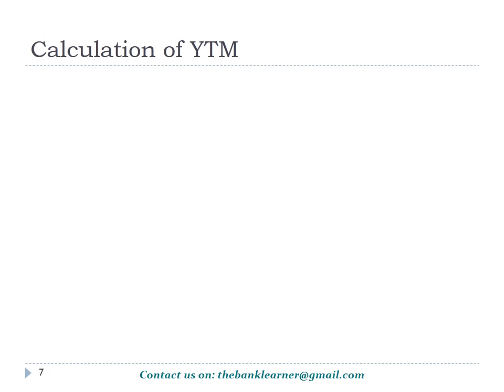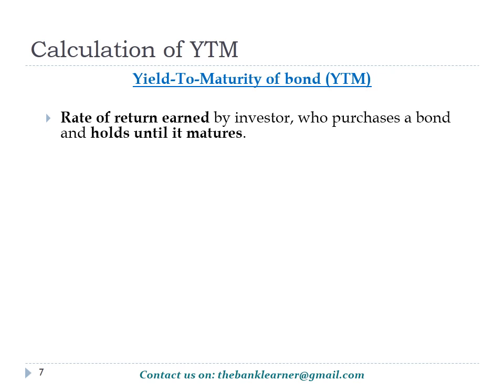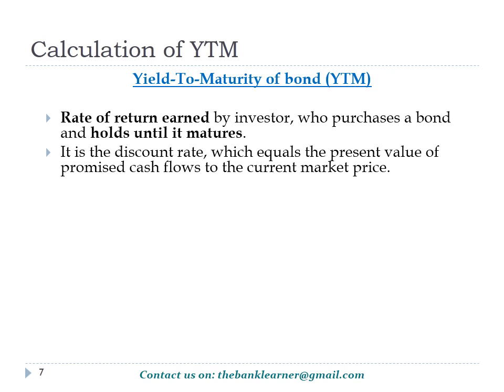Now we are going to see the most important topic in this chapter — yield to maturity. It represents the rate of return earned by an investor who purchases a bond and holds it until the end of its lifetime. It can also be described as a discount rate that equals the present value of promised cash flows to the current market price.